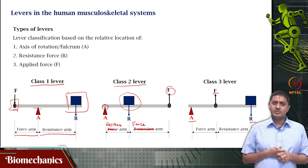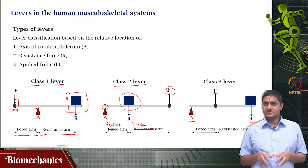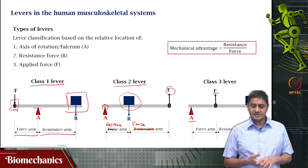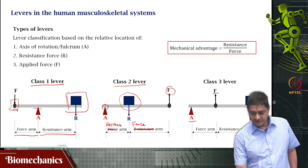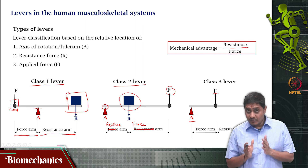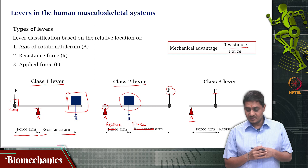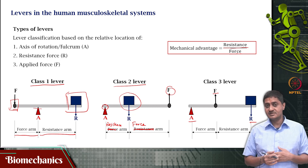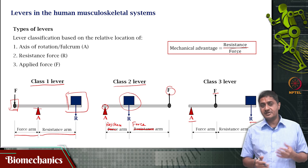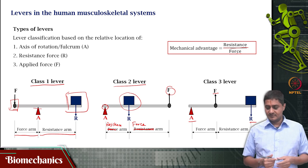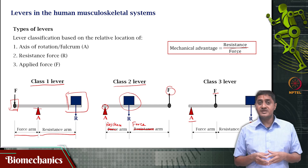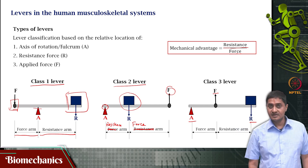Which type of lever is most prevalent in the human body? It turns out that the human body has all these types of lever. What is mechanical advantage? Mechanical advantage is the amount of resistance divided by the amount of force. So when you apply less force that can overcome a greater resistance, the mechanical advantage will be greater than 1. When you have to apply a larger amount of force to overcome a relatively smaller resistance, mechanical advantage will be less than 1. That does not mean that mechanical advantage is necessarily always a desirable quantity, as we will see in a future slide.